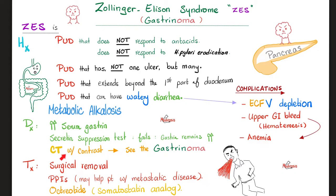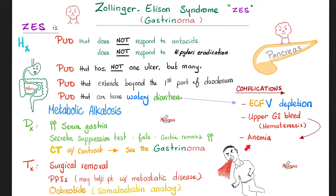Can I see the tumor? Yes — we have ultrasound, CT scan with contrast, and MRI. Complications of gastrinoma or Zollinger-Ellison syndrome include volume depletion from watery diarrhea, upper GI bleed, and hematemesis — vomiting blood from the ulcers. When you lose blood, you can suffer from anemia, which starts as normocytic anemia and can later become microcytic anemia.